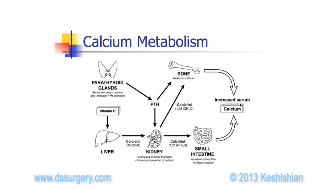Parathyroid hormone also sends signals to the kidney to allow for absorption of more calcium that may be lost in the urine. And as a secondary function, it will help with absorption of more calcium available in the GI tract taken by mouth. Essentially this whole loop starts with sensory signals identifying low calcium in the blood, causing parathyroid hormone secretion, which results in bone breakdown, resorption and absorption of calcium from the kidney and the small intestine.